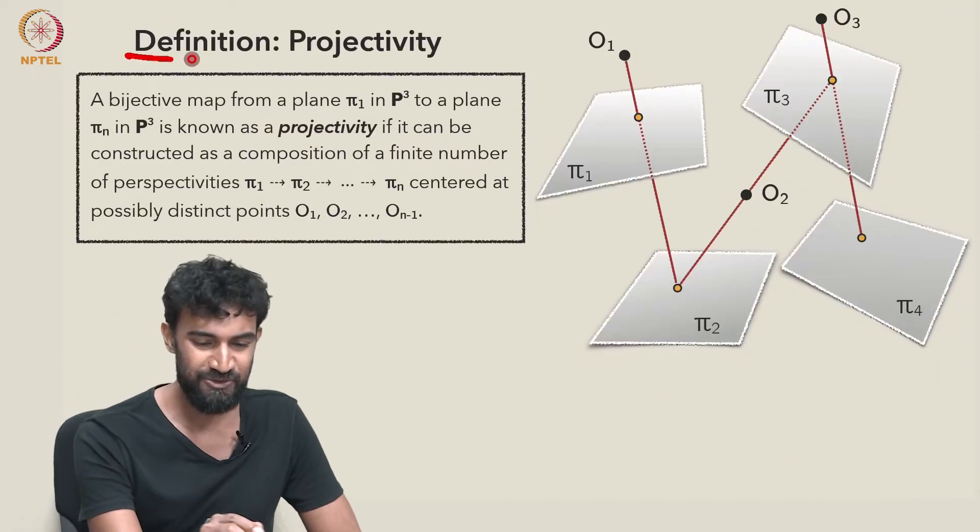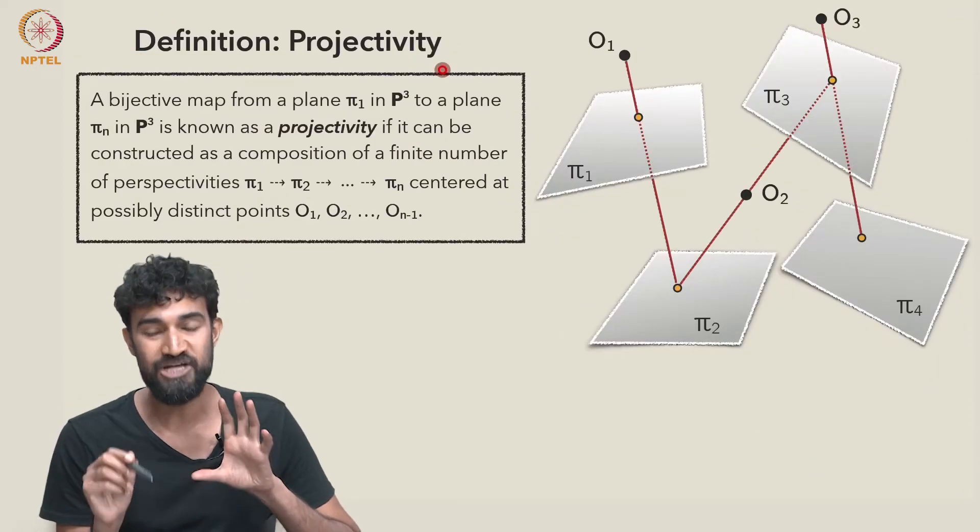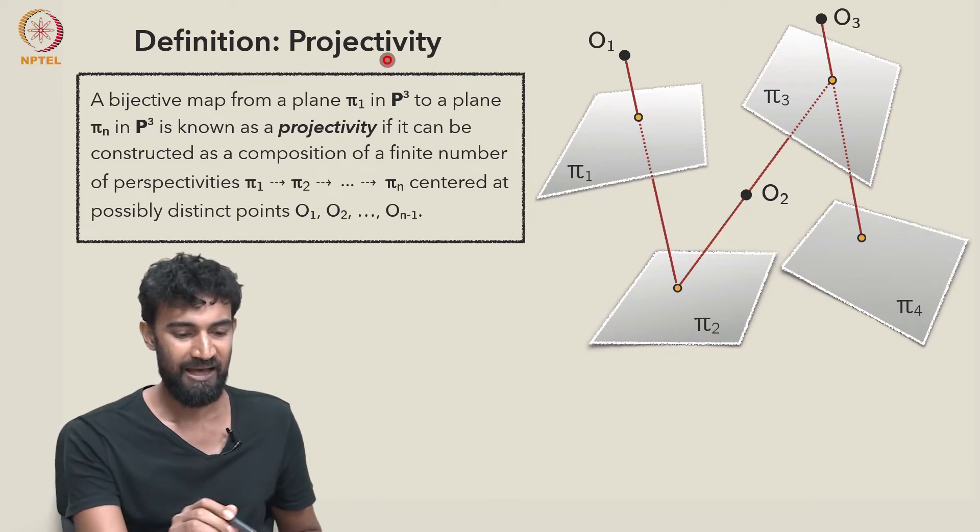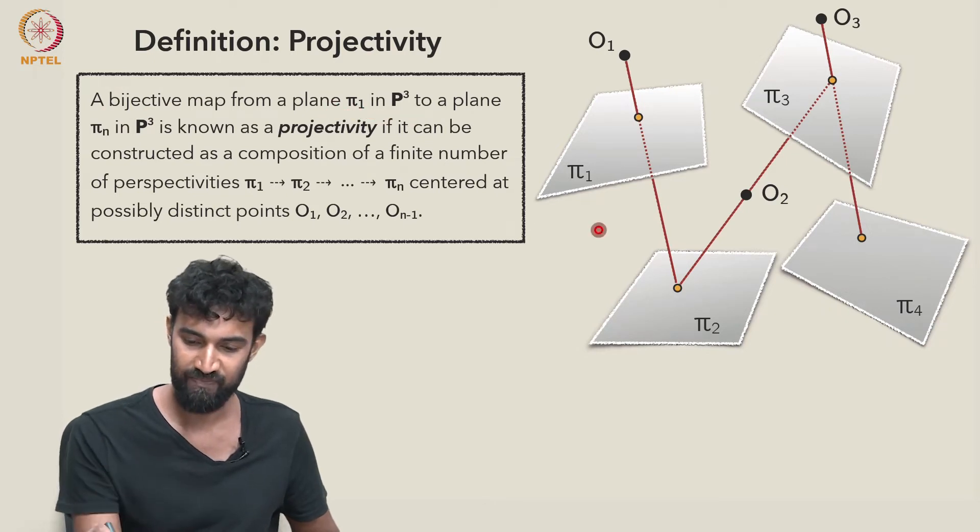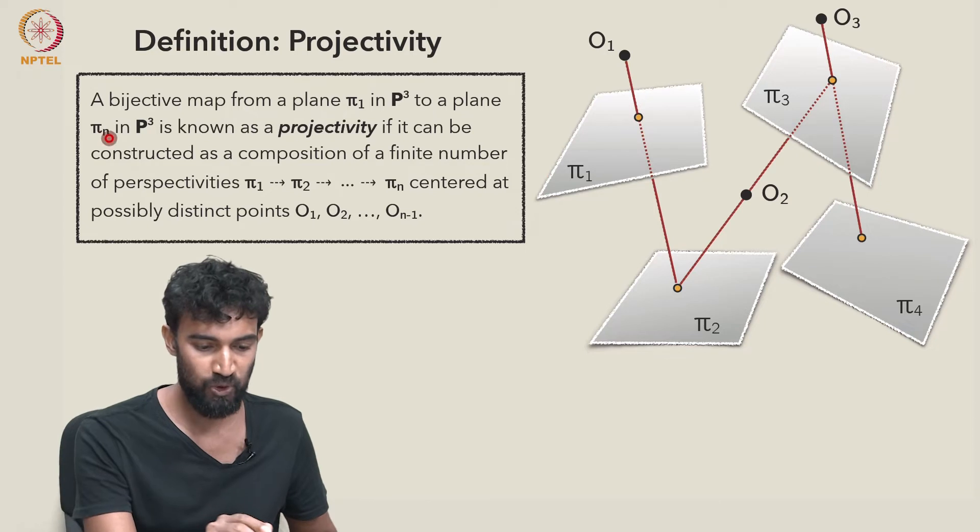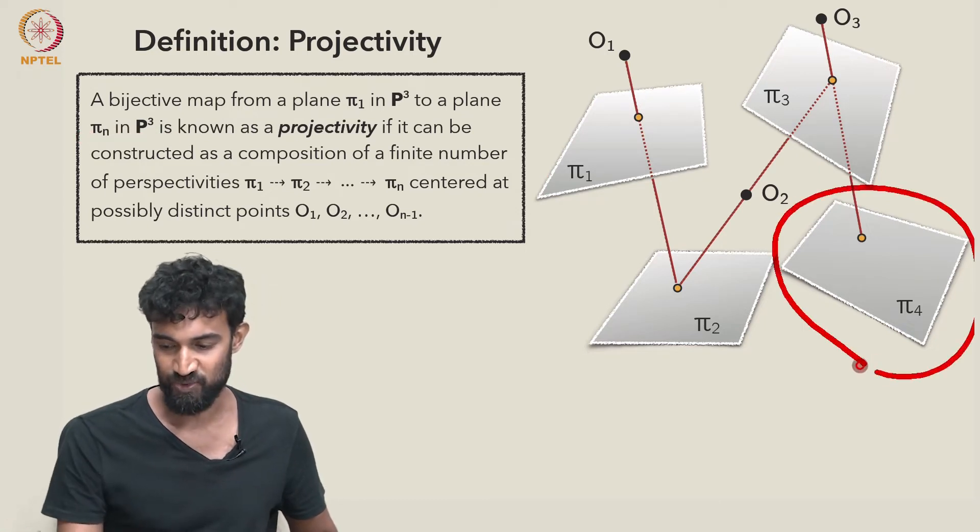So we need a new definition, a projectivity, like projection. And a projectivity is a bijective map from a plane π₁ in P³, like this one here, to a plane πₙ in P³, like this one here.